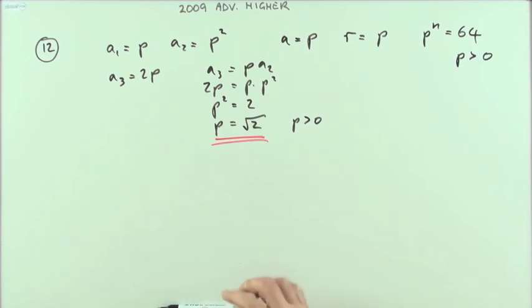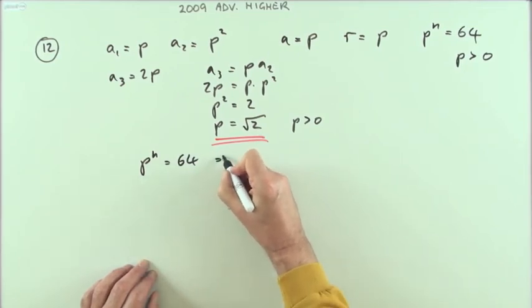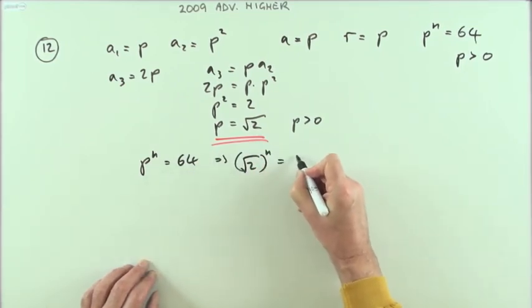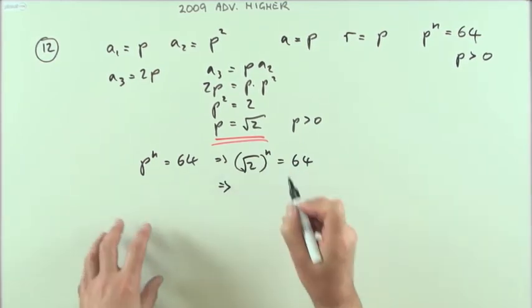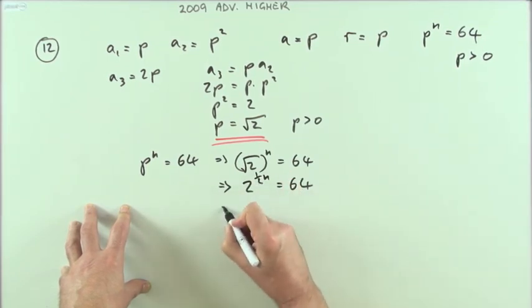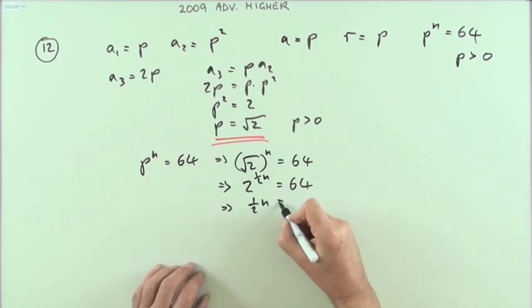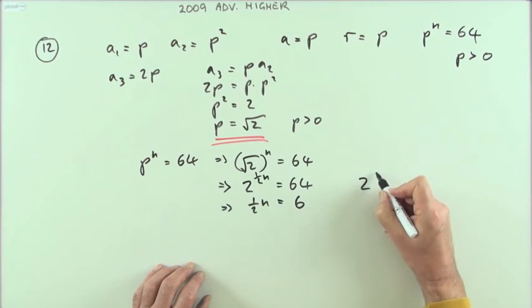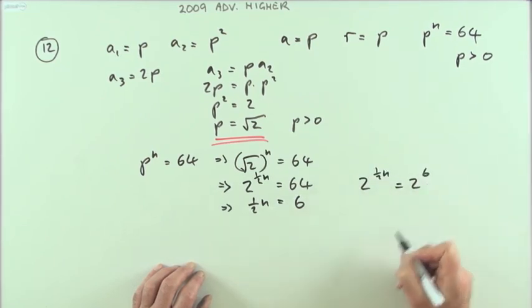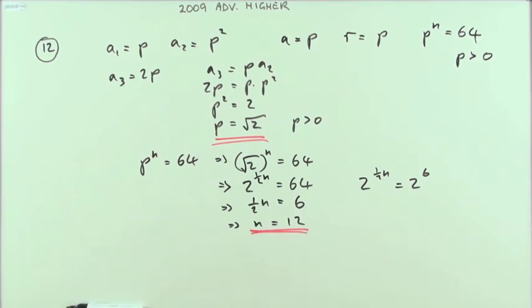For the value of n, I had p^n = 64. That means (√2)^n = 64. Now √2 is 2^(1/2), so that's 2^(n/2) = 64. You don't need logs for that because 2^6 = 64, so n/2 = 6, which means n equals 12. That was question 12.